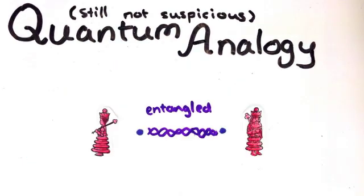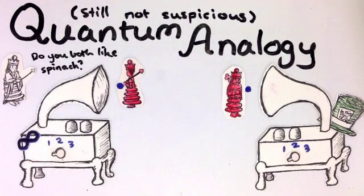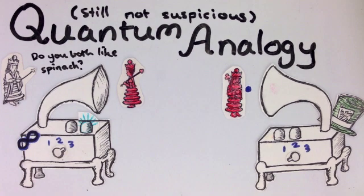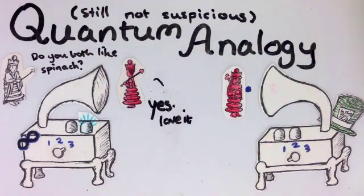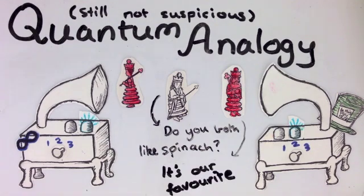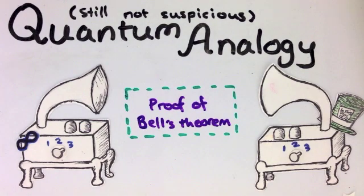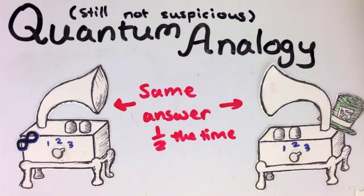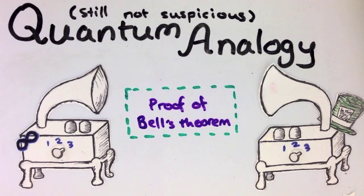We could give the spies each one electron entangled to their partners, and they could measure it in one of three directions depending on what question they're asked. That way if they're asked the same question, they will give the same answer. But again, surely this is no better than having predetermined answers. Well that's where Bell's theorem comes in. Bell showed that if you set it up just right, the spies could use this machine to make sure they only say the same answer half the time. I talked about how Bell's theorem works in detail in this video, so if you're interested, check it out.